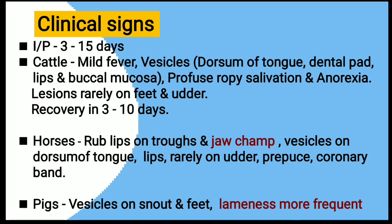In cattle, the signs are mild fever, vesicles on the dorsum of tongue, dental pad, lips, and buccal mucosa, profuse salivation, and anorexia. Lesions rarely appear on feet and udder. Recovery occurs in 3-10 days in cattle.